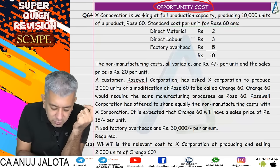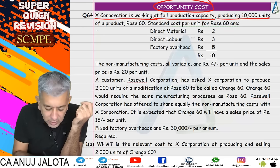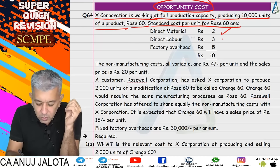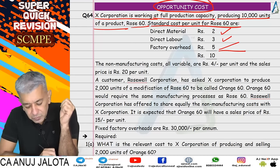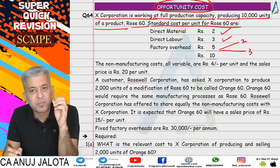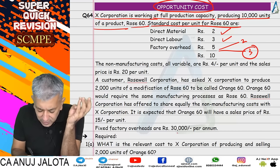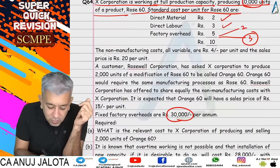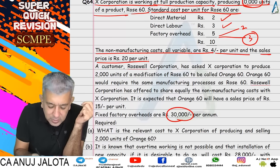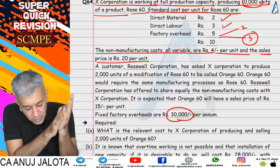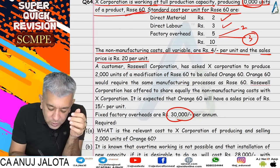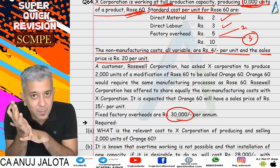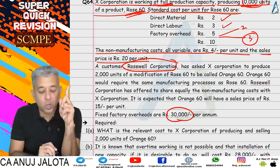Let's start question 64. X Corporation is working at full production capacity producing 10,000 units of a product Row 60. Standard cost per unit of Row 60: direct material 2, direct labor 3, factory overheads 5. Factory overheads ka do part kiya tha — variable aur fixed. Fixed waale part ke liye 30,000 given tha, 10,000 given tha, so per unit was 3. Non-manufacturing cost all variable — 8 rupees, 4 rupees per unit. Sales price is 20 rupees per unit.